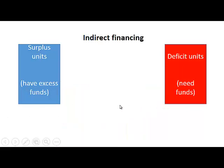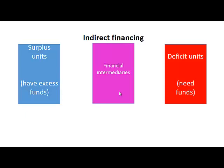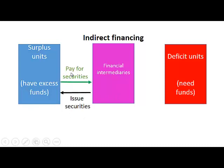To solve those problems, we get indirect financing, which takes place via a financial intermediary. The financial intermediary will issue securities, and the surplus units will pay for and hold those securities. Surplus units will be more willing to purchase securities from financial intermediaries because they are generally well known in the economy — for example, the large banks.